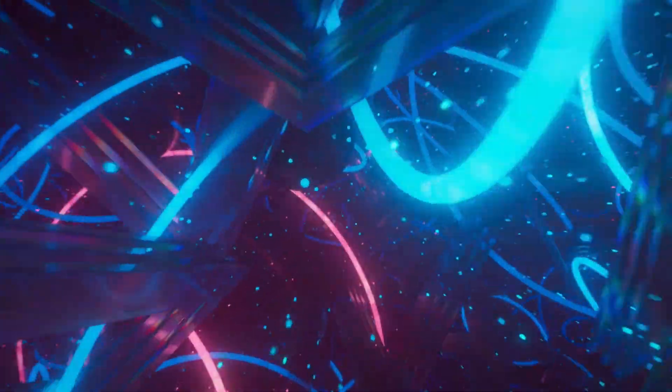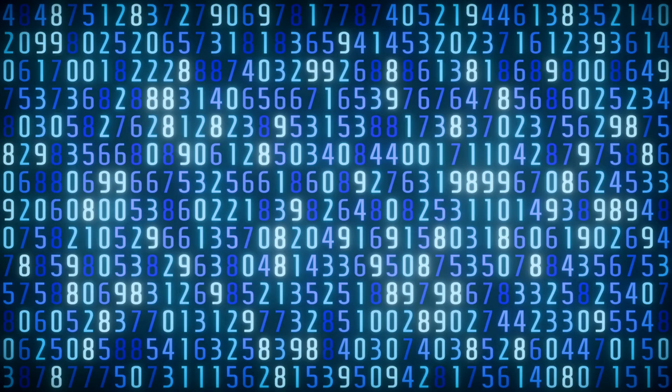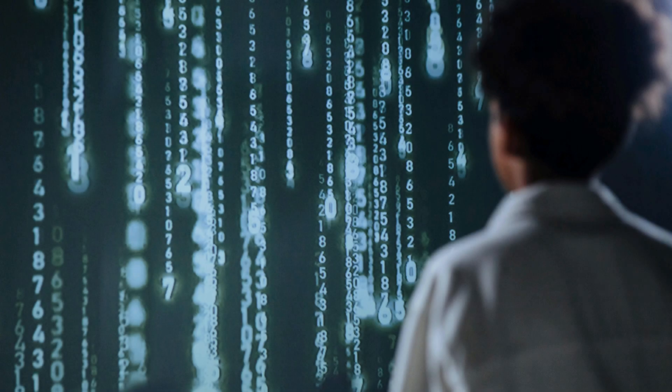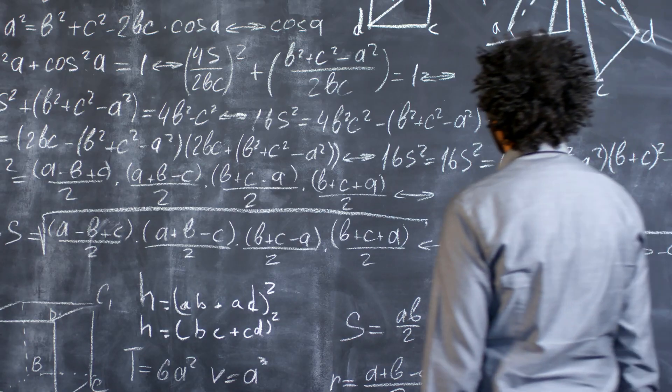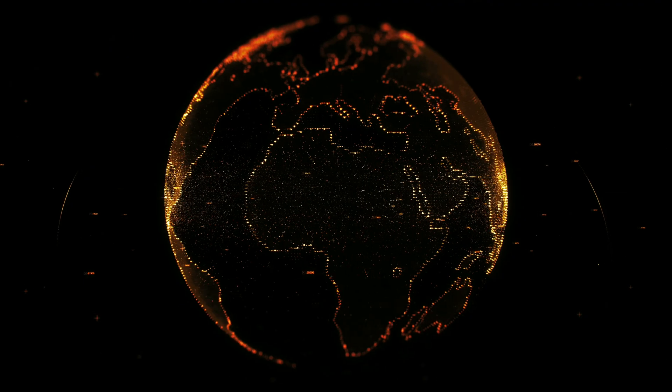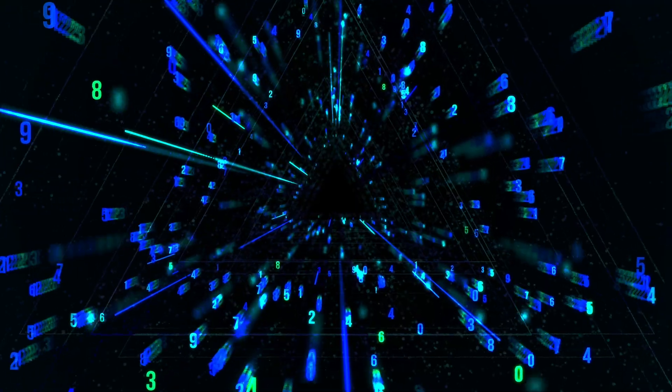Another approach involves something called the prime number theorem, which proves that there are infinitely many prime numbers. But the problem is, it doesn't actually give us a formula to find them directly. So far, no one has been able to come up with a formula that works every time. And this leaves us with a pretty big question.